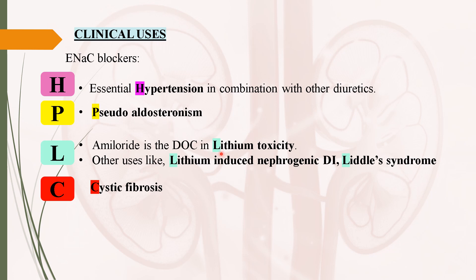Amiloride is the drug of choice in lithium toxicity. In case of lithium-induced nephrogenic diabetes insipidus, amiloride blocks the lithium transport into collecting tubules. In case of Liddle syndrome, these drugs are used to reduce hypertension. In case of cystic fibrosis, amiloride improves mucociliary clearance.